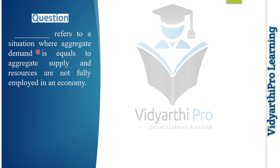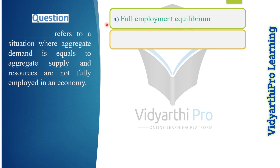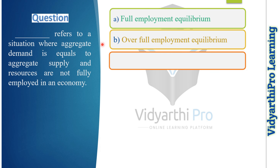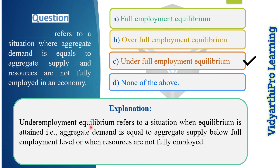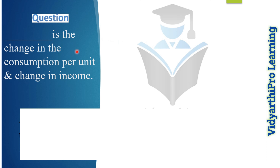Our next fill-in-the-blank question: which option refers to a situation where aggregate demand equals aggregate supply but resources are not fully employed in an economy? Options: full employment equilibrium, over full employment equilibrium, under full employment equilibrium, or none of the above. The correct answer is option C, under full employment equilibrium, because it refers to a situation when equilibrium is attained — that is, aggregate demand equals aggregate supply — but below the full employment level.